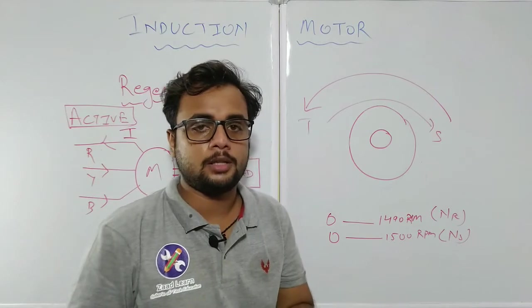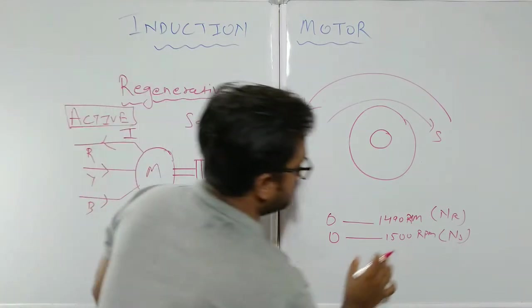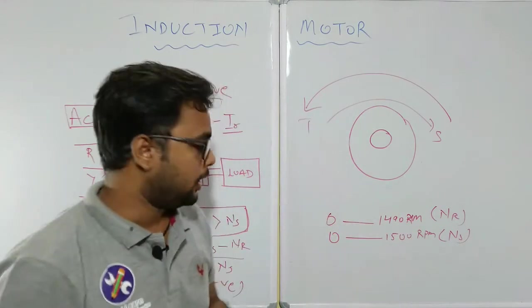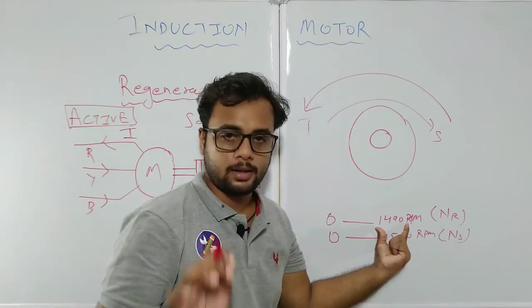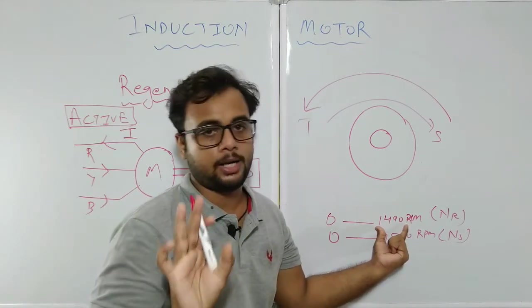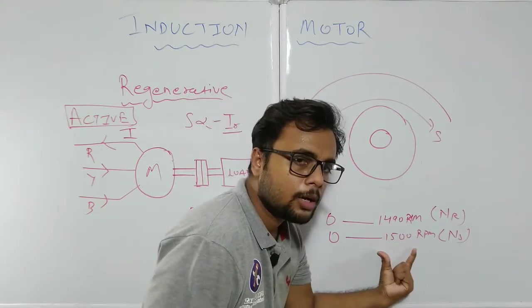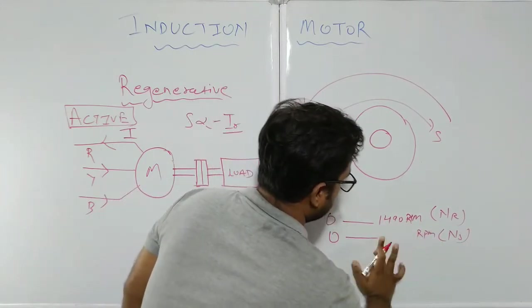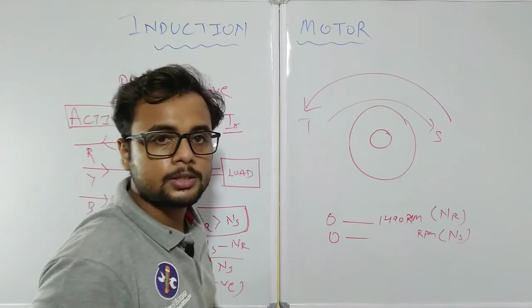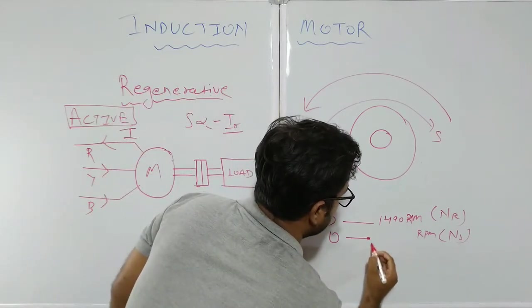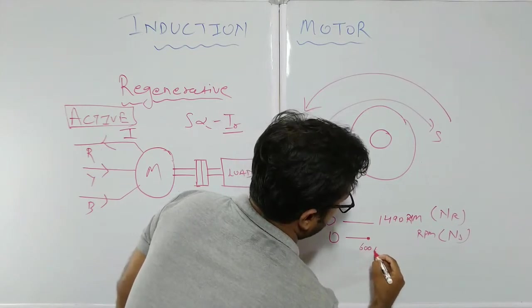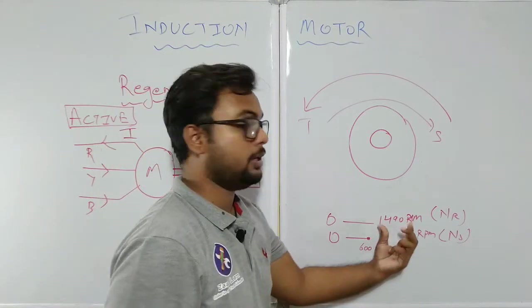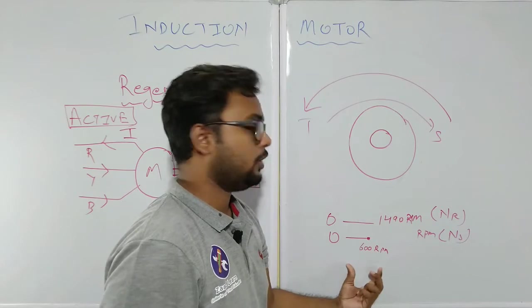Suppose the motor started and is now running at 1490 RPM, and NS is 1500 RPM. If we cannot increase NR, we can instead decrease NS. At this point, if we decrease NS from 1500 RPM down to 600 RPM, then NR at 1490 RPM becomes greater than NS at 600 RPM, satisfying the condition for regenerative braking.